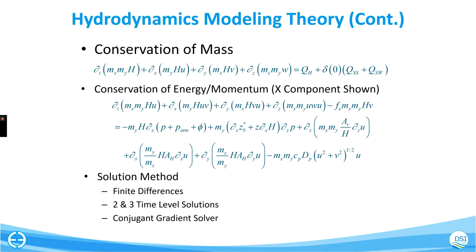You'll see many of the same terms in the conservation of energy and momentum. We also have additional terms for the effects of pressure on the model domain, bottom drag on the model domain, vertical turbulence, and horizontal turbulence. This last term is the vegetation component, which we'll be looking at on day three.